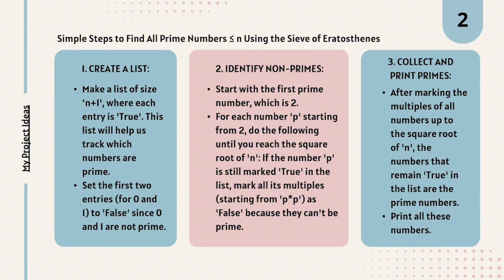Then the first prime number is 2. For each number starting from 2, you have to iterate to the square root of n. If the number p is still marked true in the list, mark all its multiples p times p as false. Suppose 2 is there in the list. 2 is a prime number. So 2 times 2 that is 4 is a non-prime number so that will be marked as false. 2 times 4 is 8, also a non-prime number. They will be marked as false because they are not prime. Prime numbers are those numbers that have only two factors: 1 and the number itself.